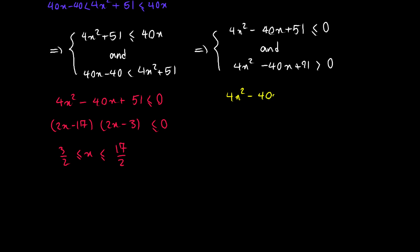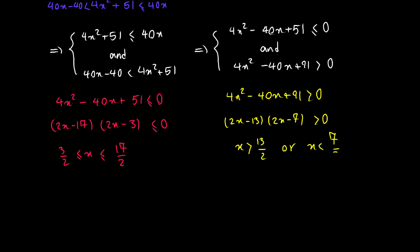For the second inequality, 4x squared minus 40x plus 91 > 0, we can factor the left-hand side as (2x minus 13)(2x minus 7), and therefore the solution is x greater than 13 halves or x less than 7 halves.